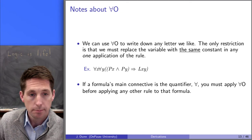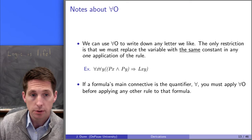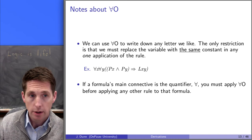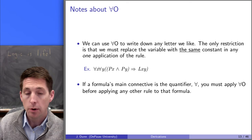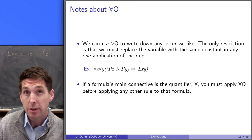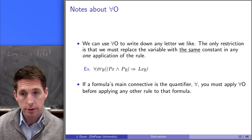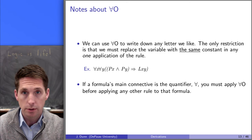The second thing to point out is that it really matters what the main connective of your formula is, whether or not you're allowed to use universal out. If a formula's main connective is the universal quantifier, you have to apply universal out before applying any other rule to that formula. Likewise, if the universal quantifier is not the main connective, you cannot apply universal out — you have to first get rid of the other parts of the formula until you have the universal as the main connective.